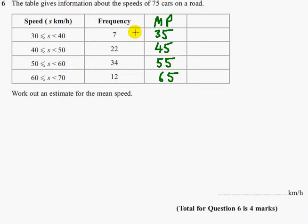So there were seven cars that travelled 35 kilometres per hour, so we need to multiply these to give us the total speeds. So 7 times 35 is 245, 22 times 45 is 990, 34 times 55 is 1,870,